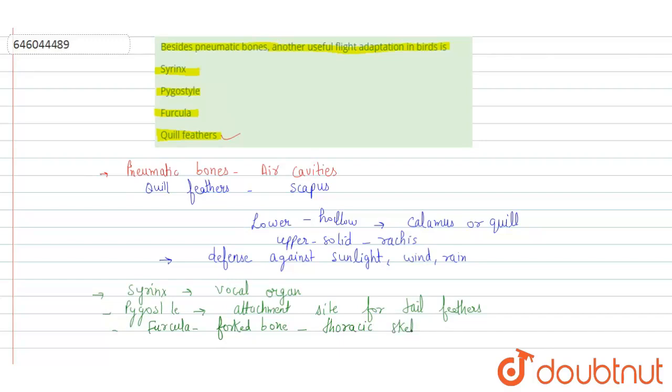From here we can conclude that the rest of the options are incorrect and the correct answer is the quill feathers. So option number four is the correct answer and rest of the options are incorrect.